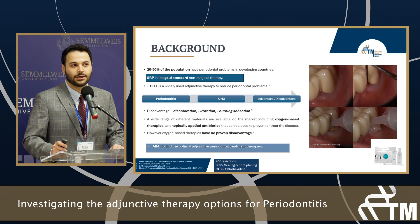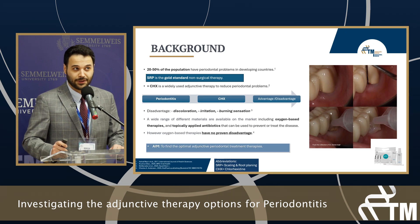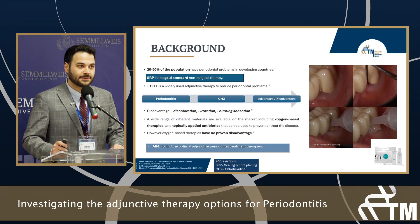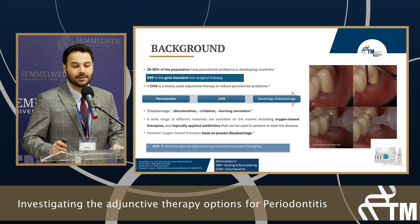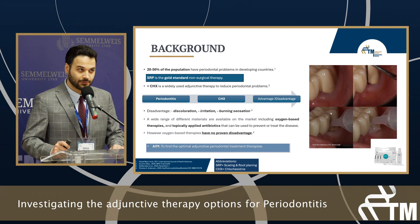A little bit about background: periodontitis is a multifactorial chronic inflammatory disease characterized by attachment loss. 20 to 50 percent of the population have periodontal problems. In developing countries, scaling and root planing is the gold standard method in the very first phase of periodontal treatment, which is non-surgical periodontal therapy.